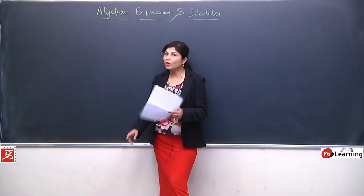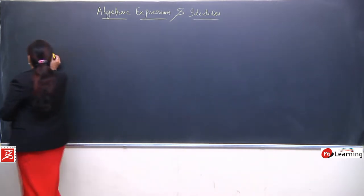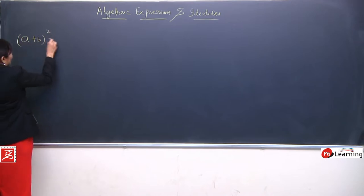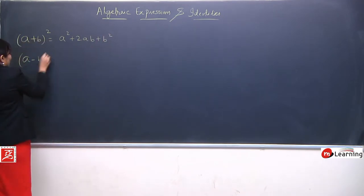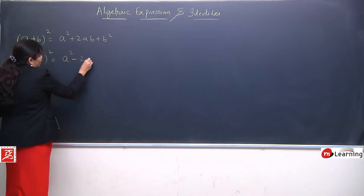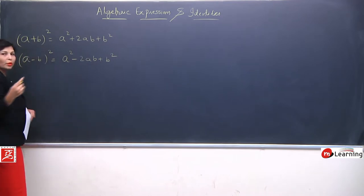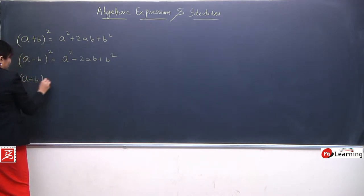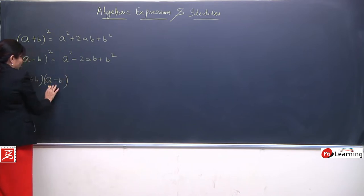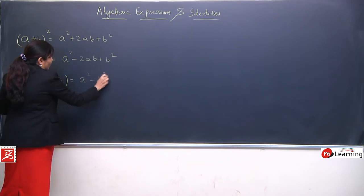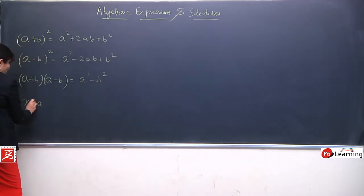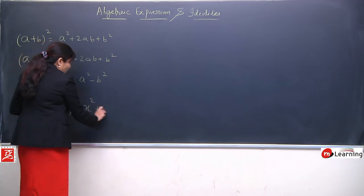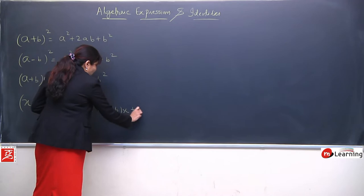We have solved so many questions based on three basic properties: (a+b)² = a² + 2ab + b², (a-b)² = a² - 2ab + b², and (a+b)(a-b) = a² - b². Now it's time to solve questions based on the fourth property: if we have (x+a)(x+b), then we can write x² + (a+b)x + ab.